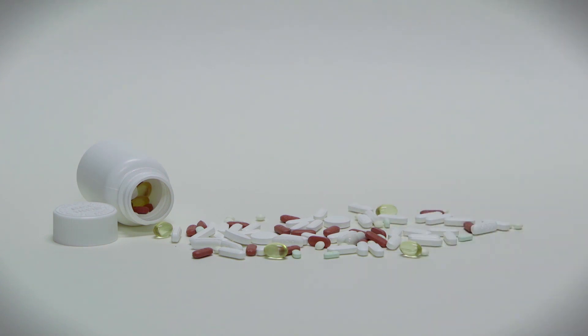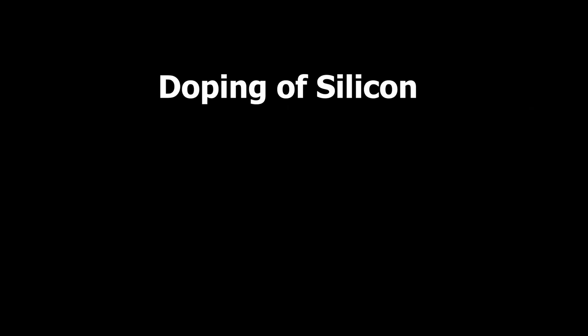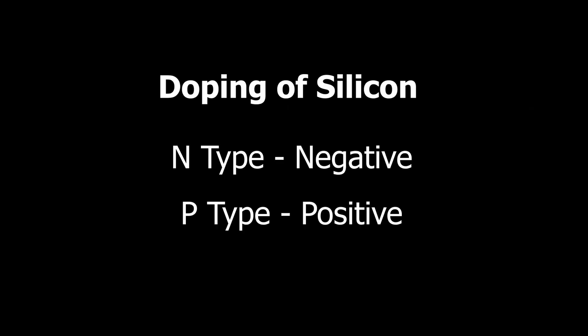To dope silicon you mix a small amount of an impurity into the silicon crystal. For the purposes of electronics there are two types of impurities, the n-type and the p-type.